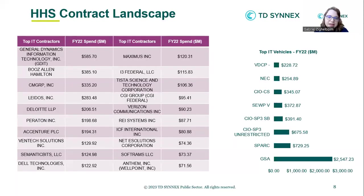Before we move on, I want to take a quick look at the Department of Health and Human Services' contract landscape. On this slide, we have to the left a table containing the top IT contractors servicing HHS in fiscal year 2022, as well as the amount of money HHS gave to each of these contractors in millions. To the right, we have the top contract vehicles HHS used for IT procurement in fiscal year 2022, as well as the amount of money it spent on each of those contract vehicles, once again in millions.